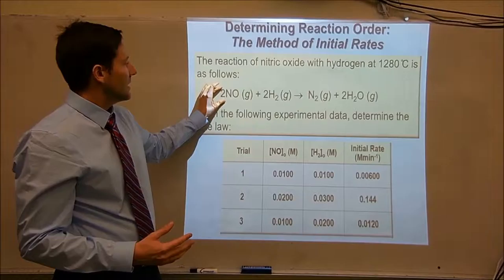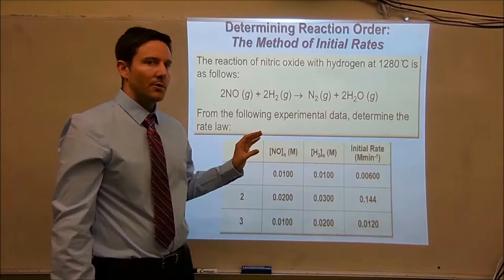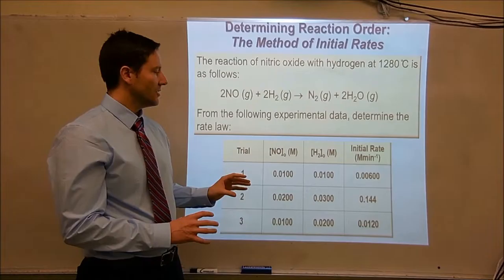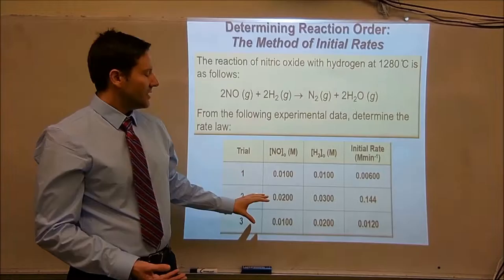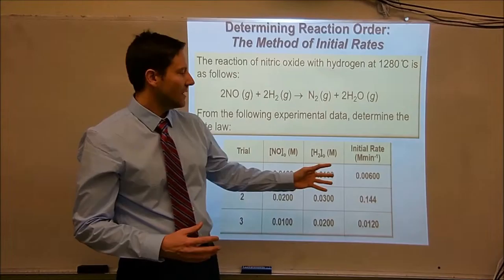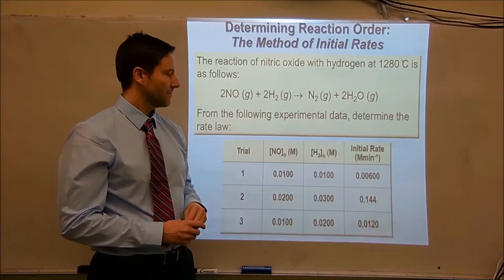Consider a chemical reaction like this one: nitric oxide plus hydrogen makes nitrogen gas and gaseous water. You do the experiment three times and you collect data. What you do is change the initial concentrations of each of the reactants going from one experiment to the next, and this is going to change the initial rate of the reaction. What we're trying to do is see how the initial rate of the reaction is affected by changes in concentration of each of the reactants.